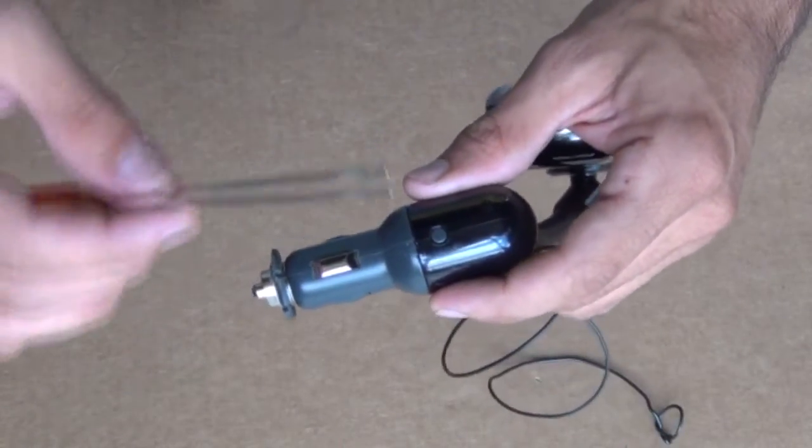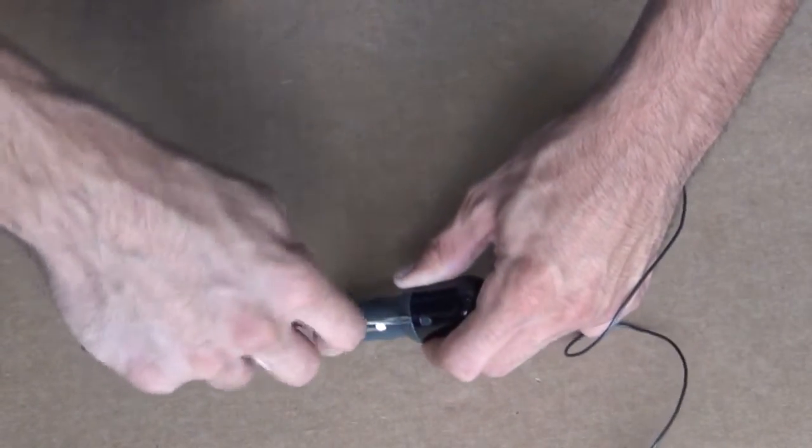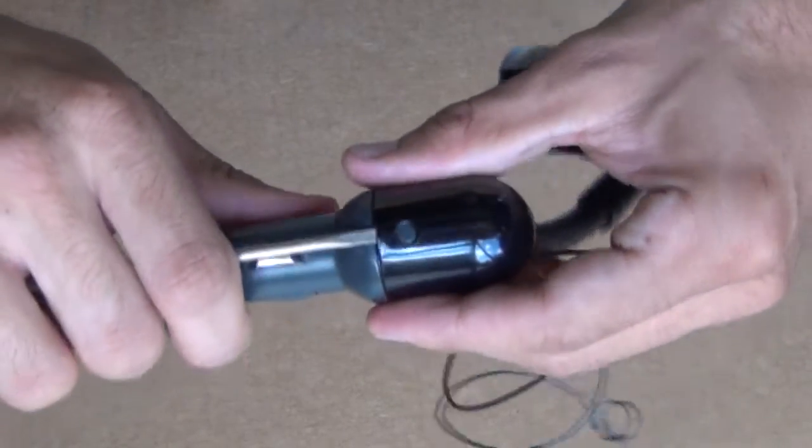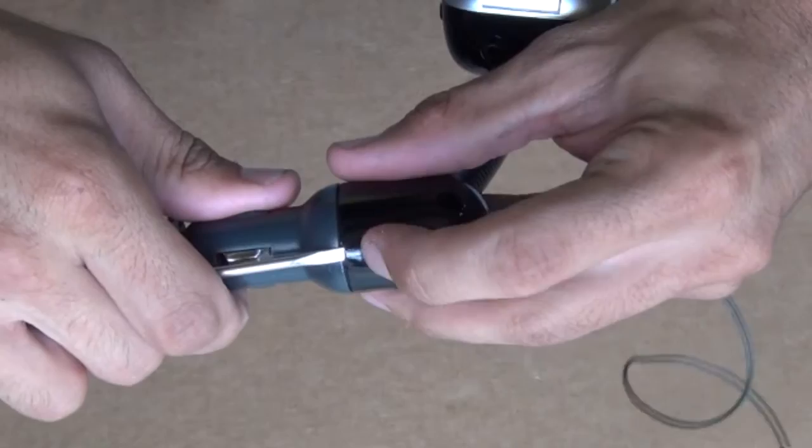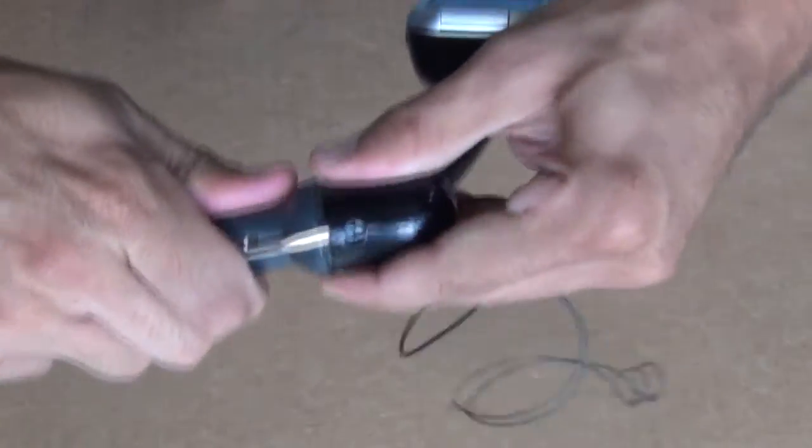So the first thing we'll do is use the flathead screwdriver and I'm going to do this on the ground so I don't stab myself. You're going to want to put that right inside that sleeve right by this little dimple and then slide that sleeve off.